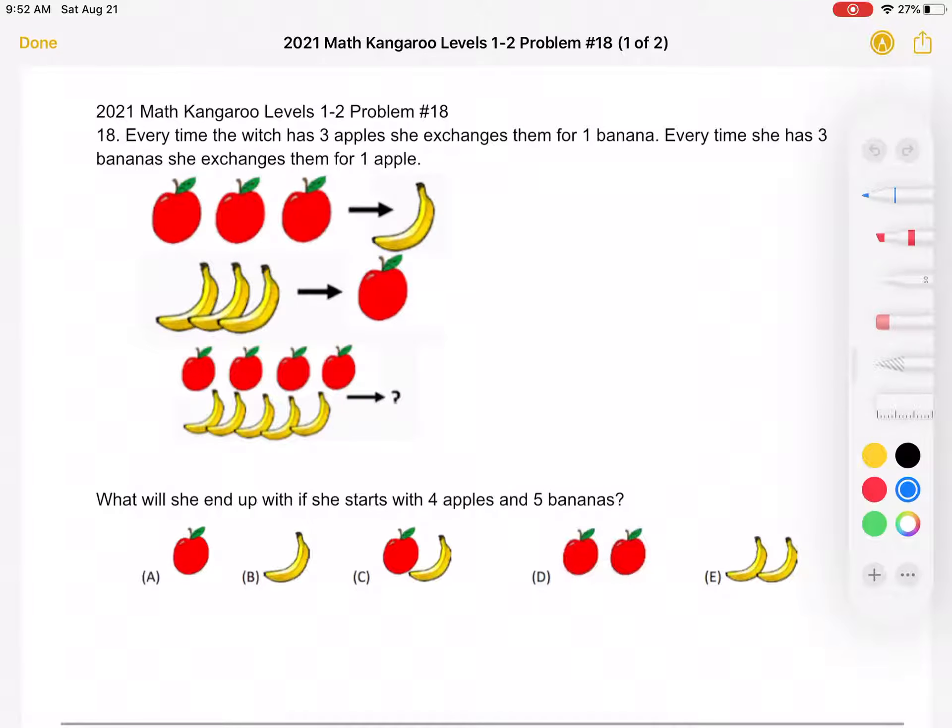This is the 2021 Math Kangaroo levels 1-2 problem number 18. Every time the witch has three apples, she exchanges them for one banana.